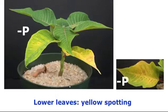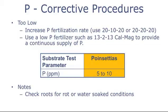Similar symptoms were observed with these plants grown in an experiment when phosphorus was withheld. As you can see, the lower leaves are yellow and there's also spotting occurring. If you have problems with phosphorus deficiencies, what do you do?